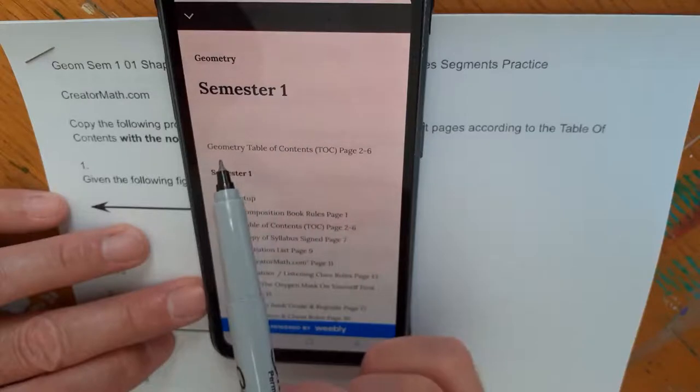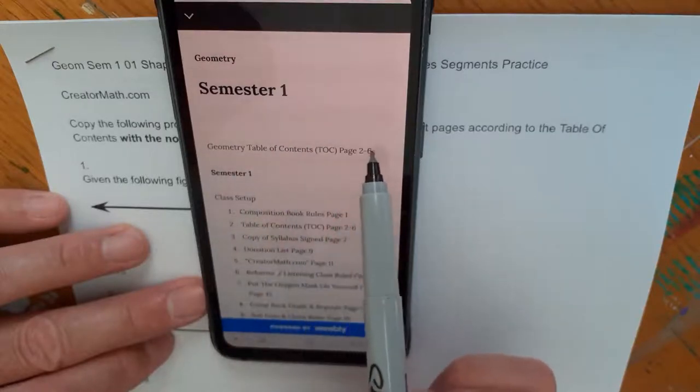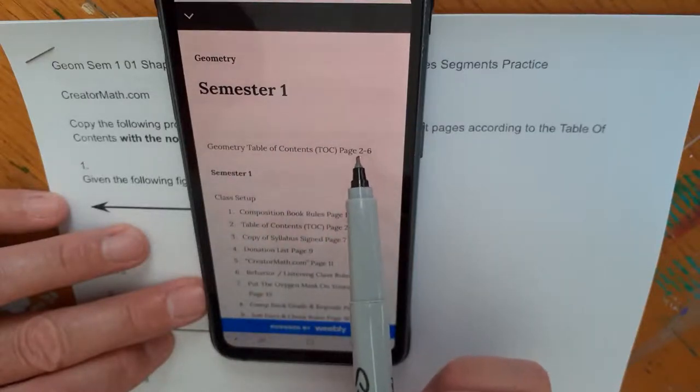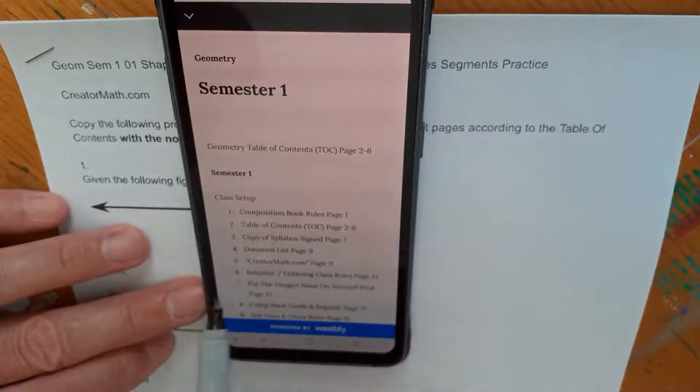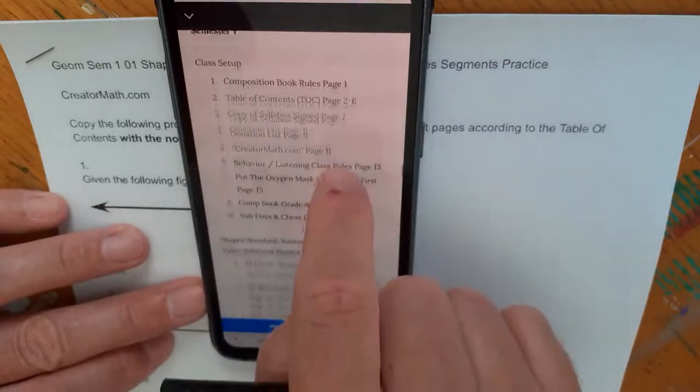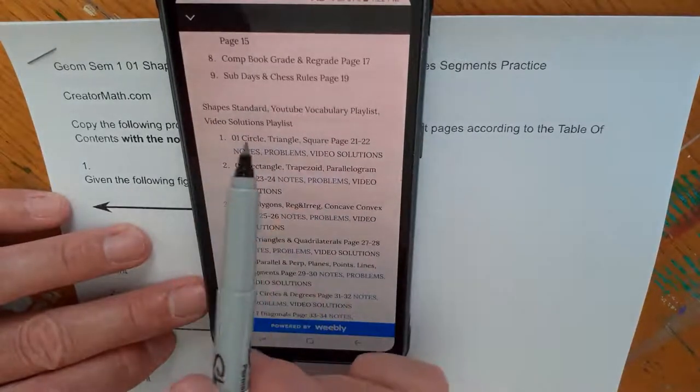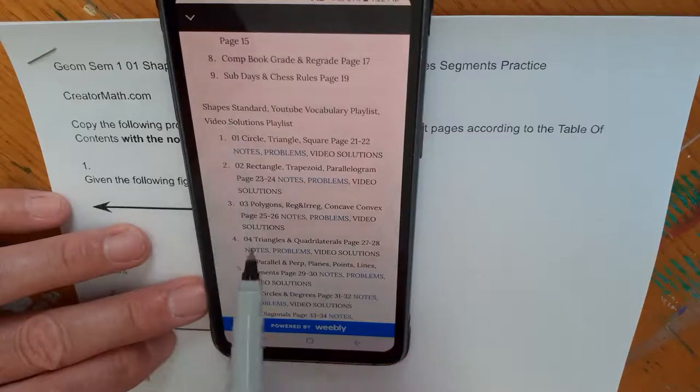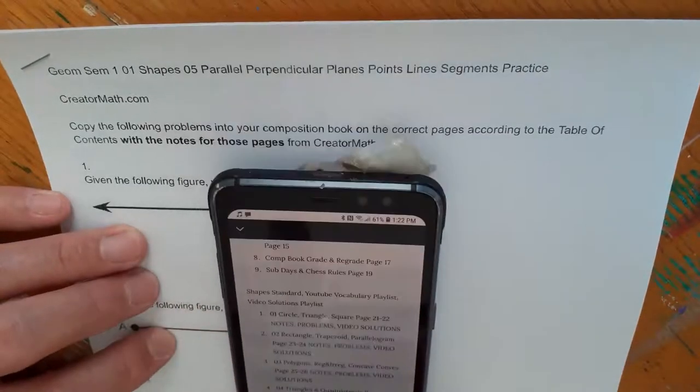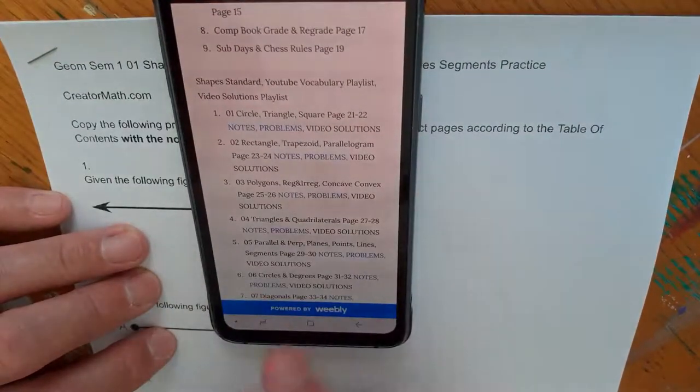Semester one, this is the Geometry table of contents. It goes on pages two through six of your composition book. If you haven't copied it there already, which you should have by now, just go and copy it if you haven't. This one is shapes standard. This is the unit. These are the lessons. This one is number five right here.